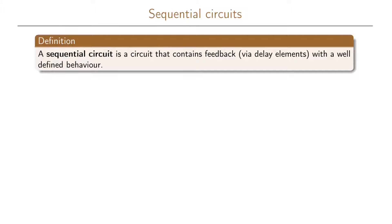Now we are ready to define our sequential circuit. The definition is that a sequential circuit is a circuit that contains feedback through delay elements and with a well-defined behavior. This well-defined behavior is what we define using our state transition graphs.